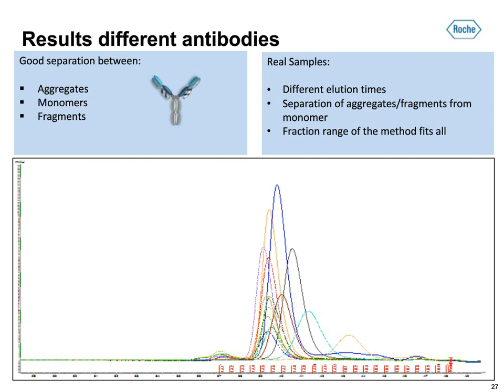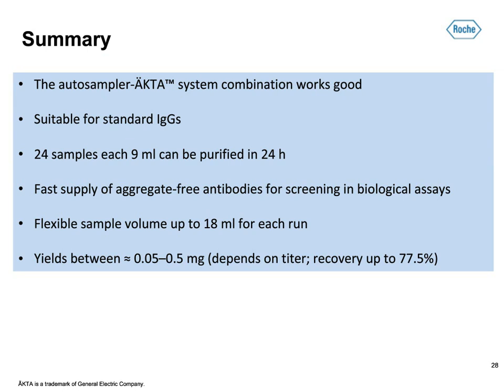Summarizing the process we have set up: the system is very robust and gives reproducible results for standard IgGs, with yields up to around 500 micrograms. It saves a lot of time while retaining the high quality of a normal two-step process, and we can supply 24 aggregate-free antibodies in 24 hours. Besides being fast, the system is also flexible in respect to sample volume and can give recoveries of up to 77.5%. Thank you for your attention.